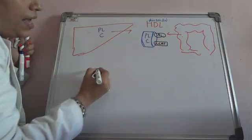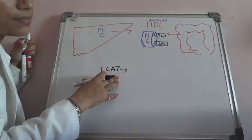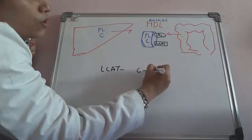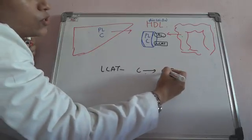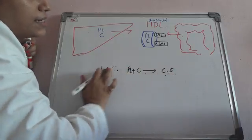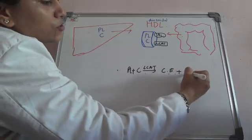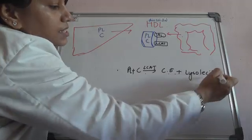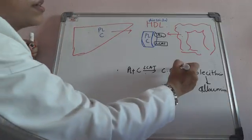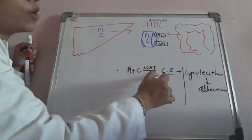Now what is LCAT? LCAT is lecithin cholesterol acyl transferase. This is an enzyme required for converting cholesterol to cholesterol ester — esterifying cholesterol. The phospholipid plus cholesterol that is present, in the presence of LCAT — lecithin cholesterol acyl transferase — will form cholesterol ester plus lysolecithin. This lysolecithin will be carried by albumin and it will go into the plasma, so we are not bothered about this part.